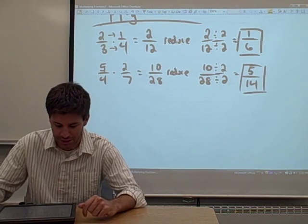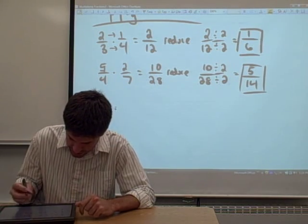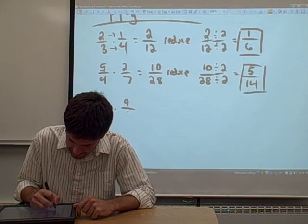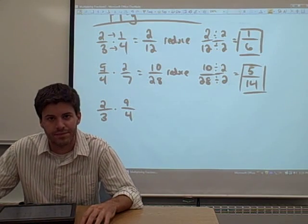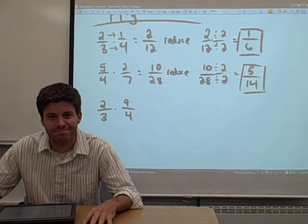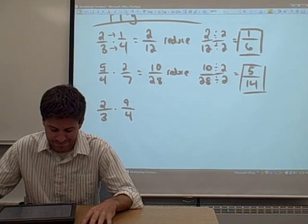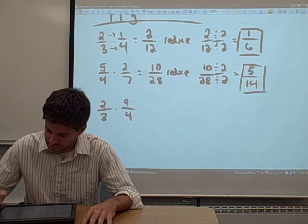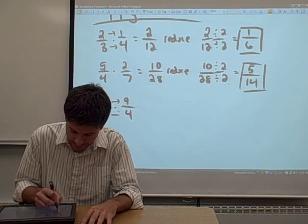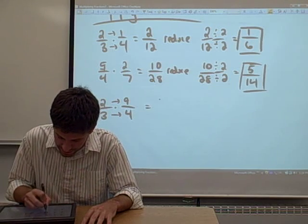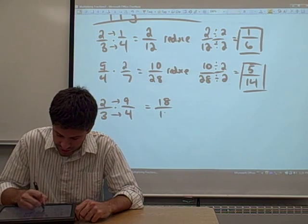Why don't you give it a couple of shots? Try two thirds times nine fourths. Let's work on that one for a little while. Hit pause on your video and give it a shot. Okay, let's see how you did. Multiply straight across the numerator — two times nine is eighteen. Multiply straight across the denominator — three times four equals twelve.